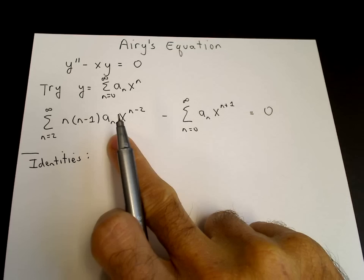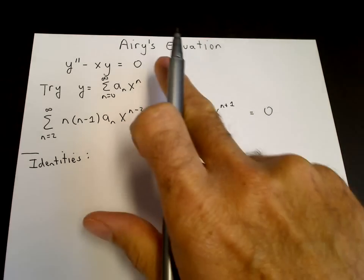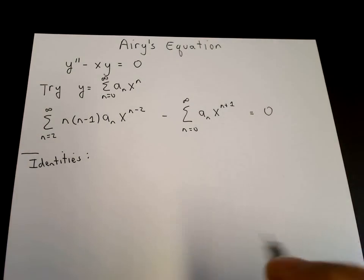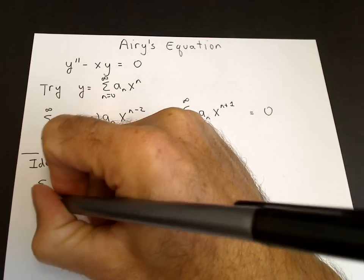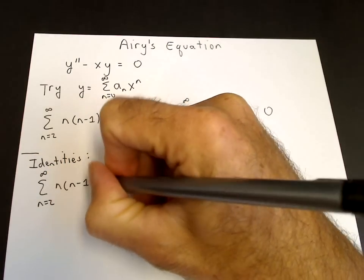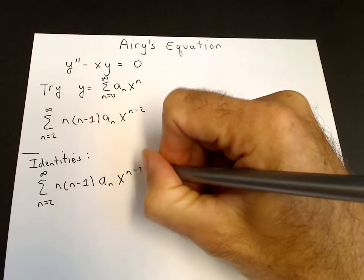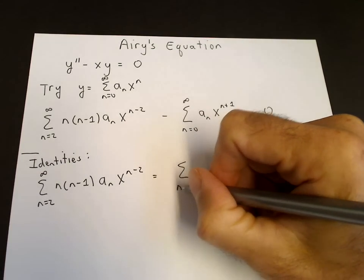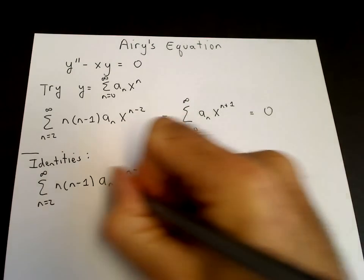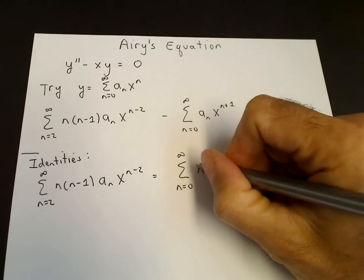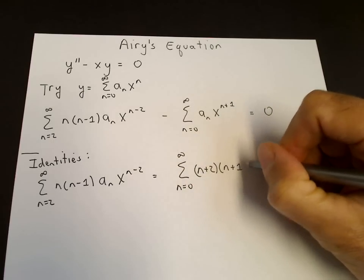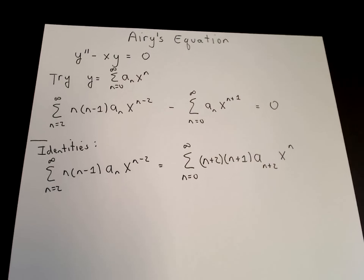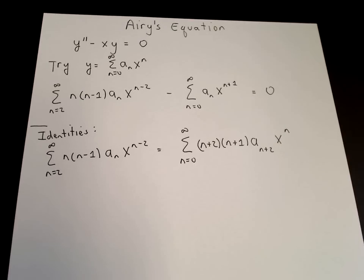For the first sum, we shift n up by two to make x to the n, so the lower limit becomes n equals zero. The sum from n equals two to infinity of n(n minus one) a sub n x to the n minus two equals the sum from n equals zero to infinity of (n plus two)(n plus one) a sub n plus two times x to the n. This is an identity — term by term, each left-hand side term equals the right-hand side.